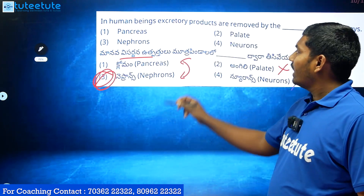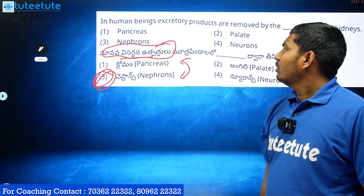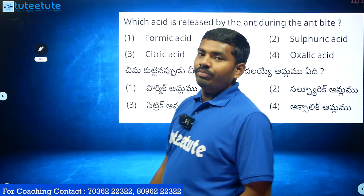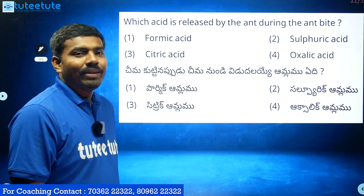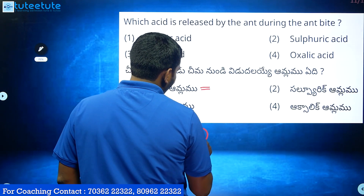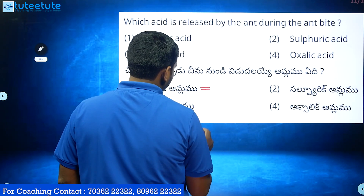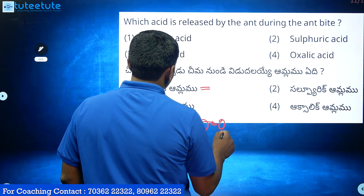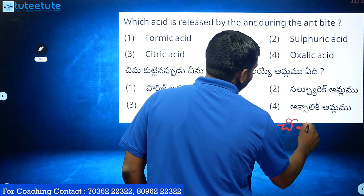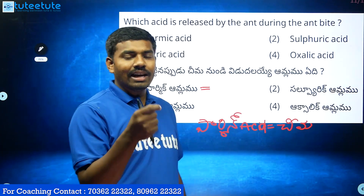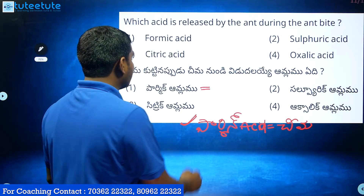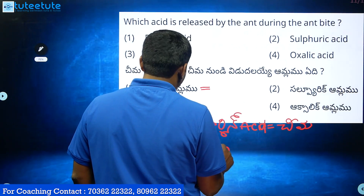The nephrons are the functional units responsible. The nephrons is the same — this is the answer for the kidney excretion question.